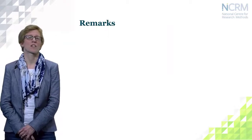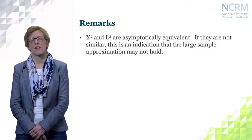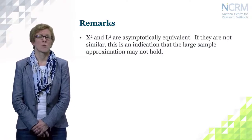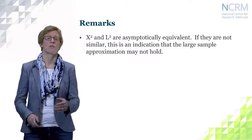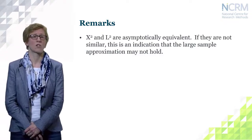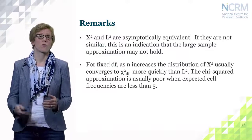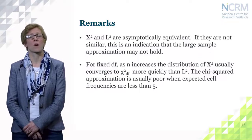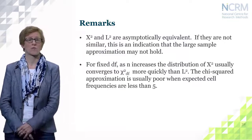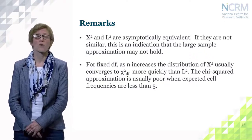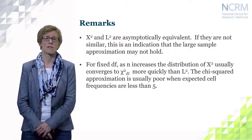A couple of remarks: the Pearson chi-square test and the log-likelihood ratio test are asymptotically equivalent — both rely on large samples and should give similar results. If they do not, this may indicate that the large-sample approximation doesn't hold. For fixed degrees of freedom, as n increases, the Pearson chi-square distribution converges to the chi-square distribution more quickly than the log-likelihood ratio test. Also note that the chi-square approximation is generally poor if any expected cell counts are less than five.